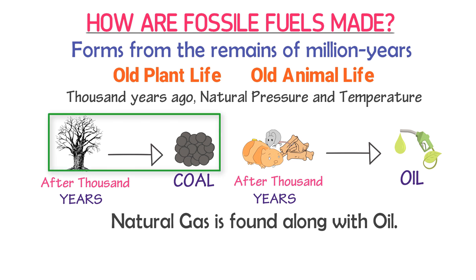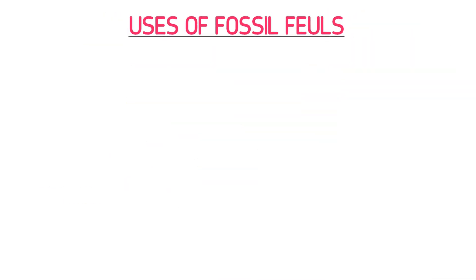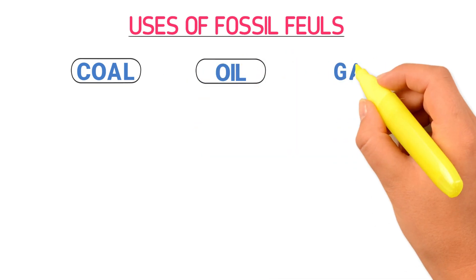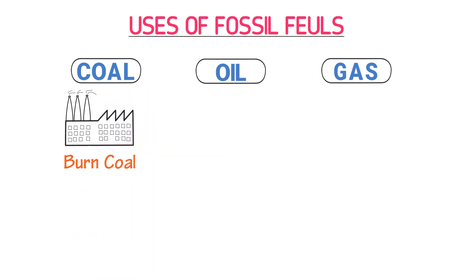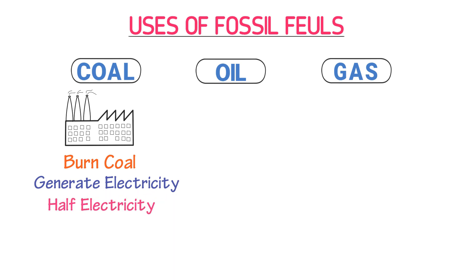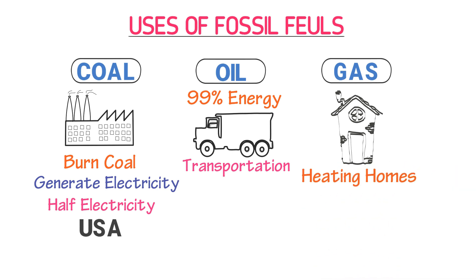Coal is formed from dead plants, while oil and natural gas are formed from dead animals. Now, what are the main uses of fossil fuels? Coal, oil, and natural gas have many uses in our daily life. In thermal power plants, we burn coal to generate electricity — coal alone provides half the electricity in the United States. Oil provides 99% of the energy for cars in the form of diesel or petrol for transportation. Natural gas is commonly used for heating homes as well as providing heat for industrial applications.